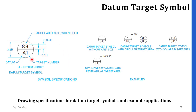On the left side of the figure, you can see the dimensions that you have to use while drawing the datum target symbol on the drawing. On the right-hand side, you can see various acceptable applications for placing the datum target symbol. You can add a datum target symbol without the area size, with a circular target area (in two methods), with a slot target area, or with a rectangular type of target area. Select the datum target symbol that best suits your drawing environment.